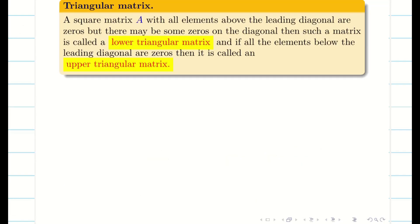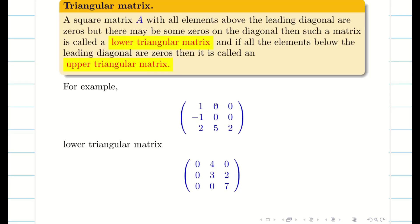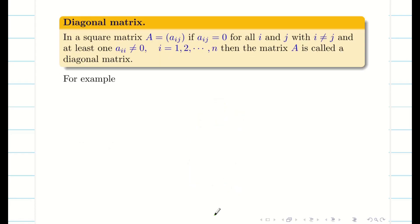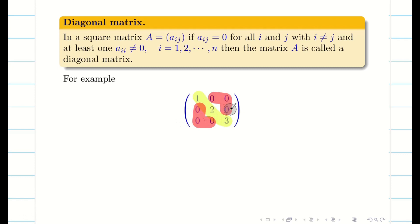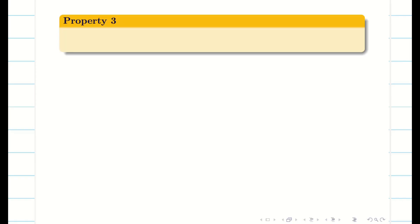Recall the basic definitions of lower and upper triangular matrices. If the elements above the diagonal are 0, it is a lower triangular matrix. Similarly, if the elements below the diagonal are 0, it is an upper triangular matrix. A diagonal matrix has at least one non-zero diagonal element and all off-diagonal elements equal to 0. For Property 3, we need these definitions.